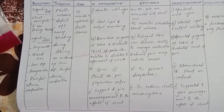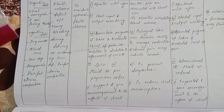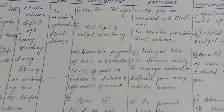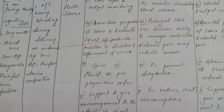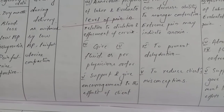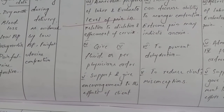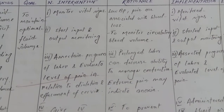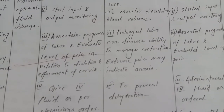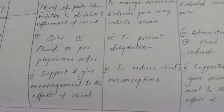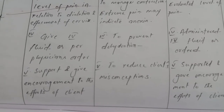Care plan — fluid volume deficit related to heavy bleeding during delivery as evidenced by low BP and painful uterine contractions. Nursing interventions: monitor vital signs, start input and output monitoring, assess progress of labor, evaluate level of pain in relation to dilation and effacement of cervix, give IV fluid as per physician's order, provide support and encouragement. Rationale: low BP and pain are associated with blood loss; prolonged labor can decrease ability to manage contractions; extreme pain may indicate anoxia.